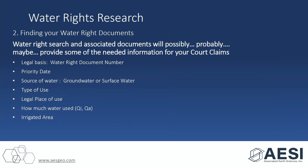So we've found how to identify which water rights are on your parcel and where to find information in the documents — all the things that Bill and Andrew talked about: the legal basis, the priority date, source of water, whether it's groundwater or surface water, type of use, legal place of use, the instantaneous and annual quantity (QI/QA), and irrigated area.